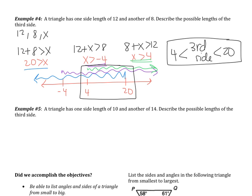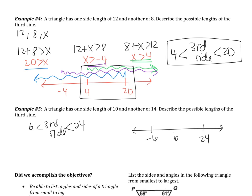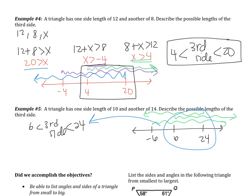Please pause and do example 5 on your own. For this example, you should have gotten that your third side is between 6 and 24. Your number line should have had -6, 6, and 24 on it, and the only overlap would have been between 6 and 24. If you didn't get that, go back and fix your mistake.